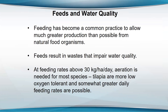Aquaculture has really become a production method for animal protein that's based mostly on the application of feeds. So feeding has become very common practice to allow greater production as possible from natural food organisms. This feed, even though it greatly increases production, not all is used for the fish — a relatively small amount is actually used for the fish because that feed that goes in is mostly dry matter. It's about 90% dry matter and the fish that you take out is only about 25% dry matter.